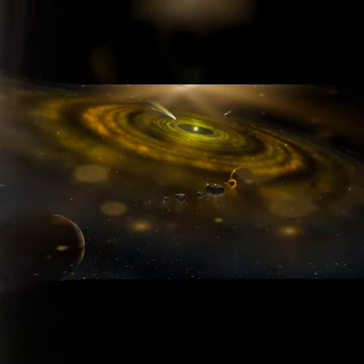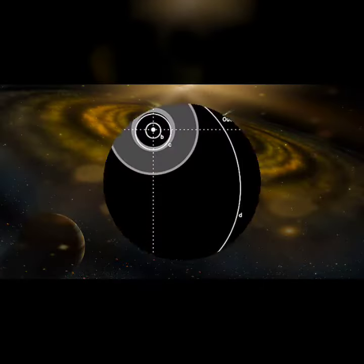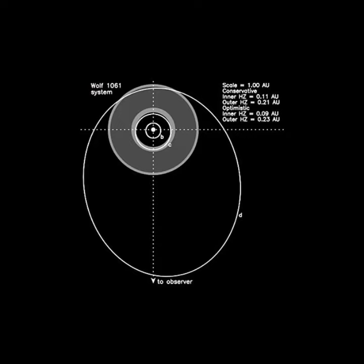Wolf 1061C is classified as a super-Earth exoplanet as its radius is over 1.5 with a mass of about 4.3 times that of Earth. It's a rocky planet with a surface gravity of 1.6 times that of Earth.